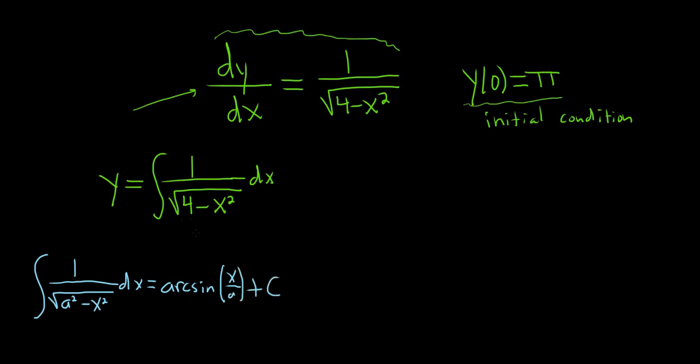So you can see here that a is 2, because you can write 4 as 2 squared. So this will be arc sine of x over 2 plus capital C.